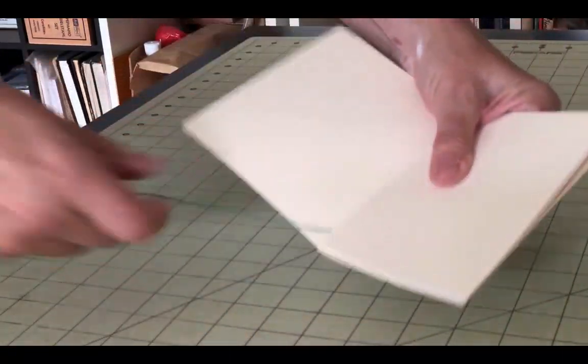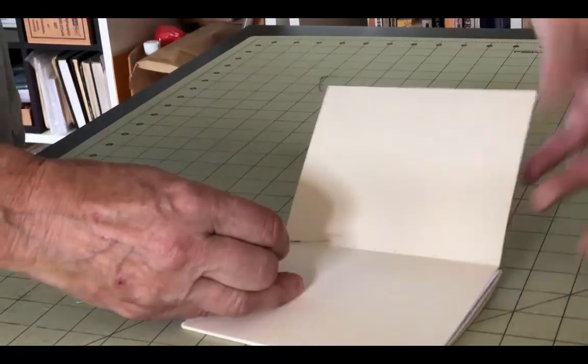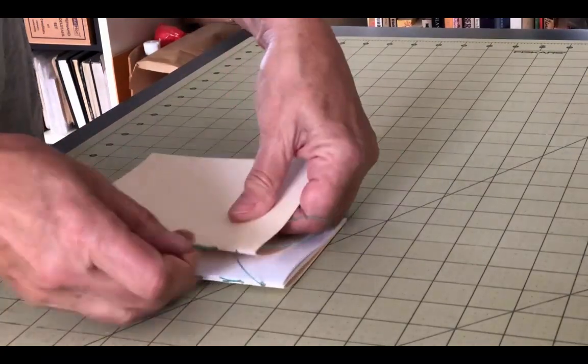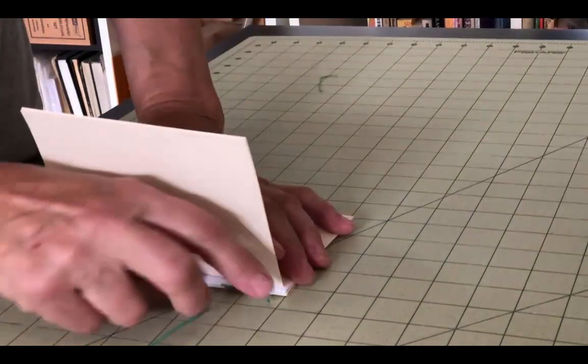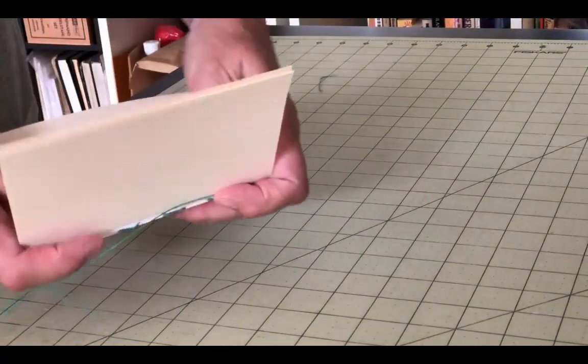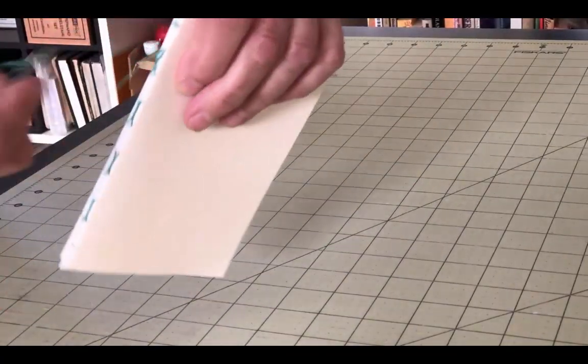Now you're back to attaching signature number 3. Sew out through the second hole. The next linking stitch loops under the stitch in the second signature only. Be careful not to catch any of the stitch that belongs to the first signature.